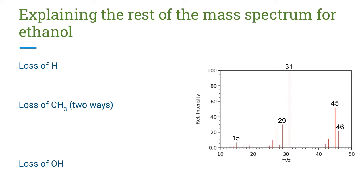Let's look at the rest of the mass spectrum for ethanol and start trying to piece together what all of these pieces mean. We do need the structure of ethanol for this. It's important to note that when molecules fragment, they fragment in chunks — the carbon with the hydrogens attached tend to fragment off together. You don't tend to get fragmentation between carbon-hydrogen bonds. You will get fragmentation between carbon-carbon bonds or carbon-oxygen bonds or other functional groups, but the carbon-hydrogen bond tends not to fragment noticeably.